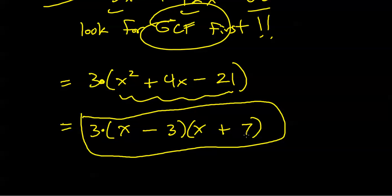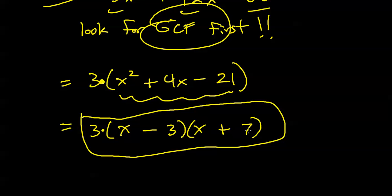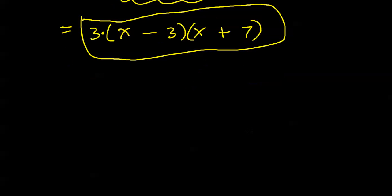Checking: x squared plus 7x minus 3x minus 21 — the inner and outer sum works. So there is my completely factored answer. Students often forget to carry the GCF down to their final answer, so be sure to include the factor of 3: 3 times x minus 3 times x plus 7. Moral of the story: look for a GCF first — if there is one available, it will almost certainly make your life quite a bit easier.